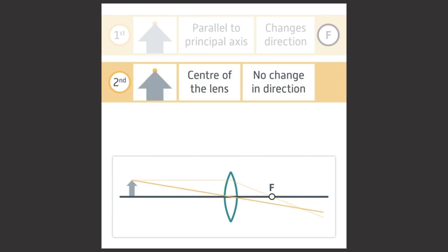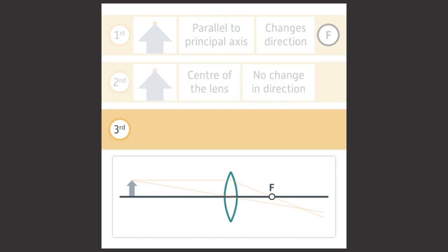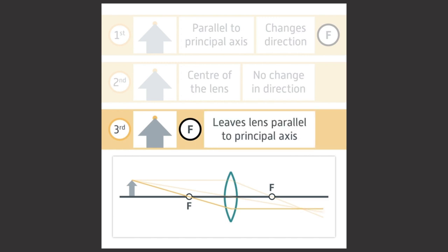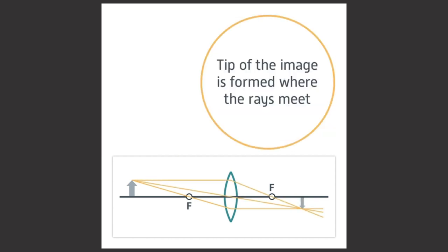The third ray goes from the tip of the object through the focal point in front of the lens and leaves the lens parallel to the principal axis. The tip of the image is formed where all three rays meet.